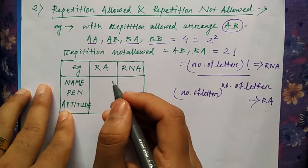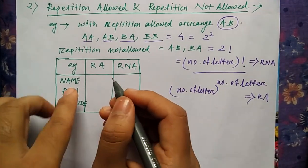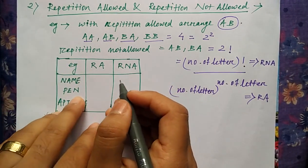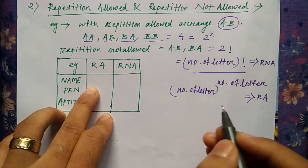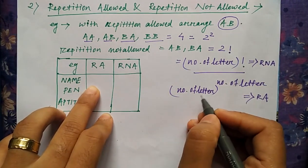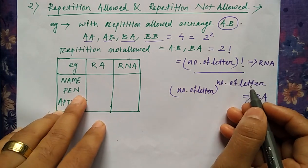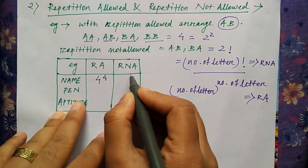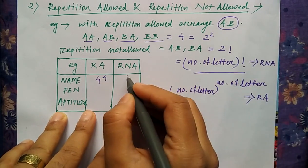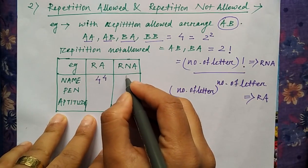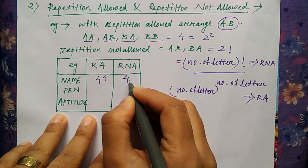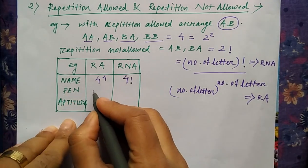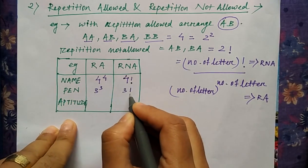We can see this in some examples. A name having 4 letters: where repetition is allowed, it is 4 to the power 4; where repetition is not allowed, it is 4 factorial. Next is 'pen' — so it is 3 to the power 3, and 3 factorial.